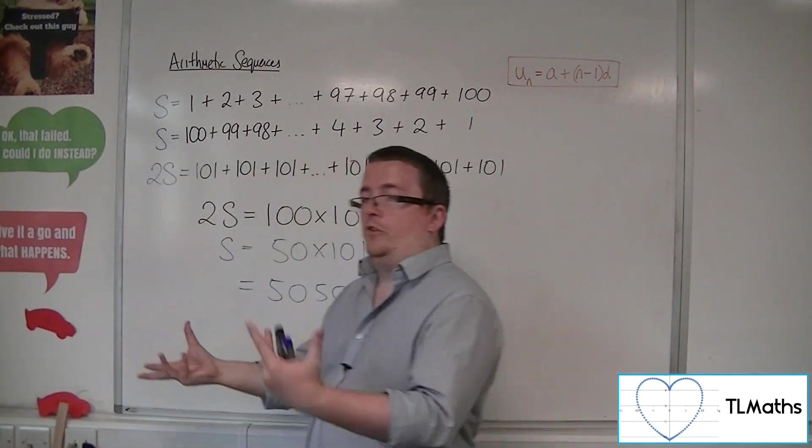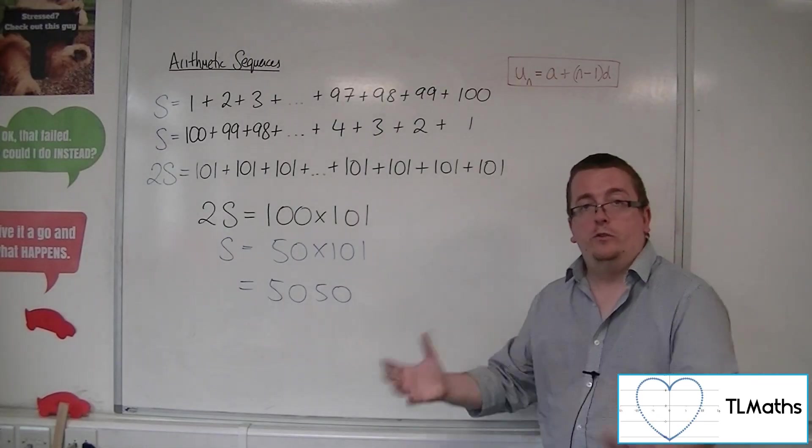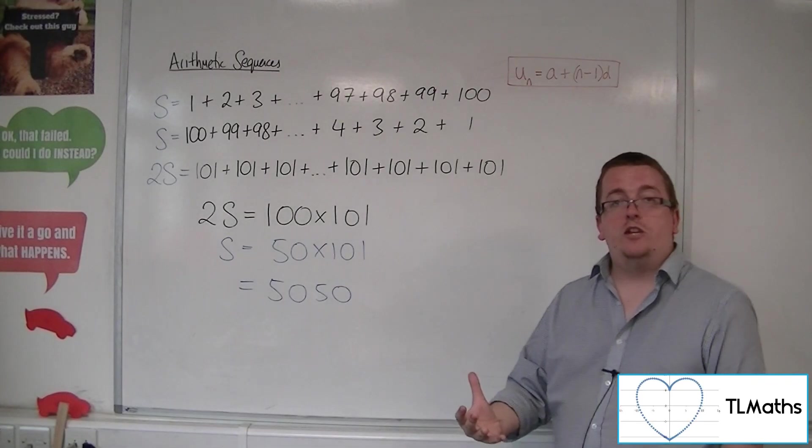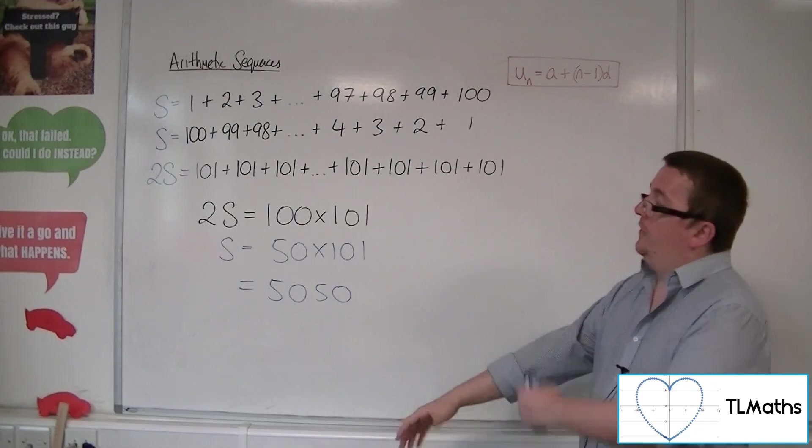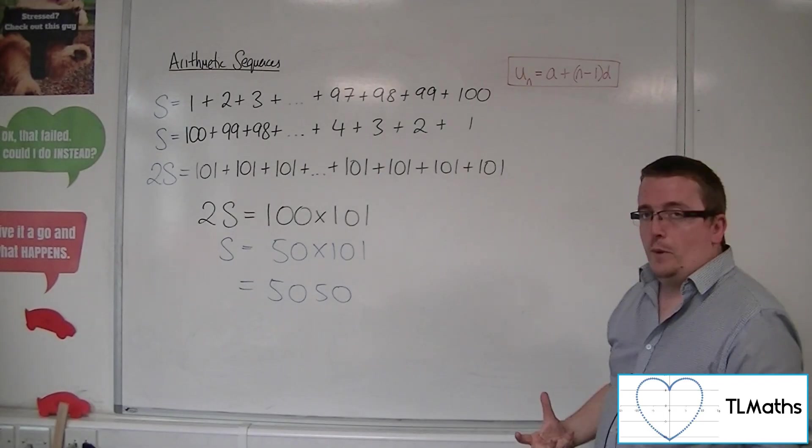And to be thinking that this was done by, you know, this was sorted out by a child, effectively. Gauss was very bright for his age and became a fantastic mathematician and a very influential one.